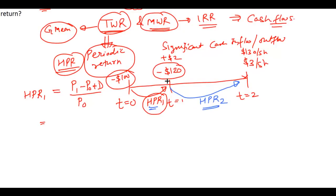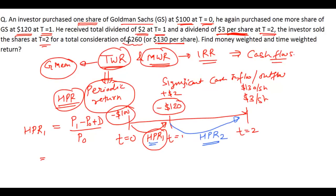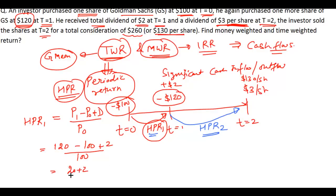To compute HPR1: the investor purchased another share at $120 at t=1, so we can say the price P1 is $120. P0 is $100, and the dividend received is $2. Since he had only one share, the dividend per share is $2. So the calculation is (120 - 100 + 2) / 100 = 22/100 = 22%. The holding period return for the first period is 22%.